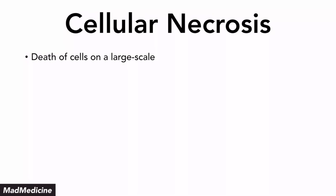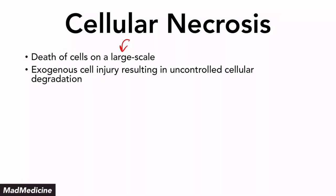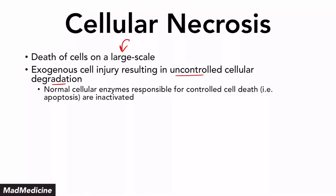When it comes to cell necrosis, you need to understand that this is cell death occurring at a large scale — not a micro level, but a macro level death happening across a large scale of cells, not just individual cells. That would be apoptosis. In this case, you're going to see an exogenous cell injury occurring — something from outside of the cell is damaging the cell and leading to uncontrolled cellular degradation. The cells are breaking down because the normal cellular enzymes responsible for apoptosis, aka programmed or controlled cell death, are actually inactivated. They are shut off.